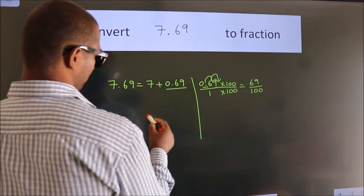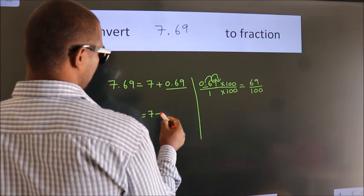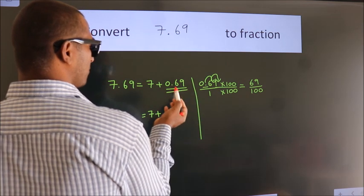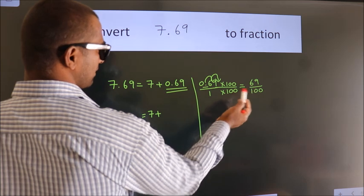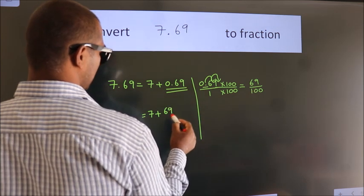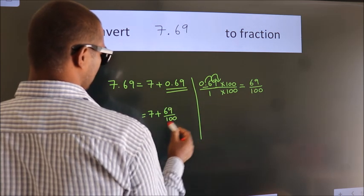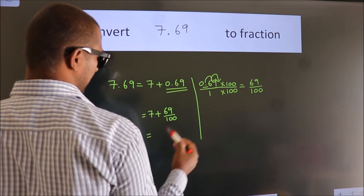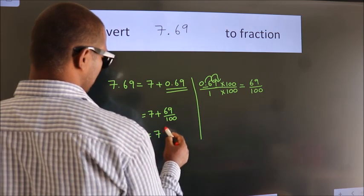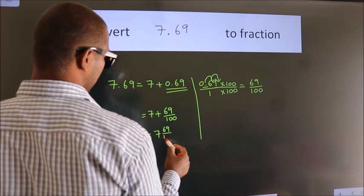Now here, 7 plus in place of 0.69, now we write this fraction: 69 by 100. 7 plus 69 by 100. In mixed fraction it is 7 69 over 100.